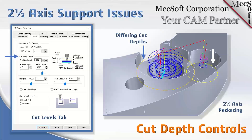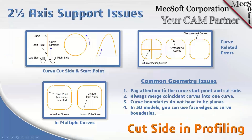The cut depth controls can also handle parts with pockets at different depths. You simply pick the bottom of each pocket, define the cut depth controls, and the program automatically figures out the different depths for you. This is a capability many users may not be aware of.